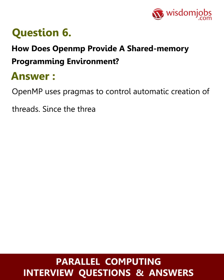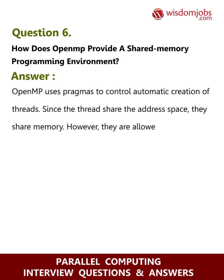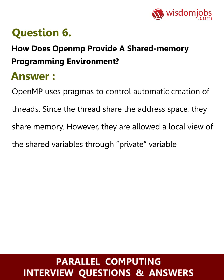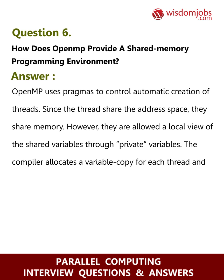Since the threads share the address space, they share memory. However, they are allowed a local view of the shared variables through private variables. The compiler allocates a variable copy for each thread and optionally initializes them with the original variable.